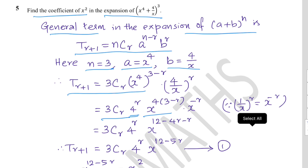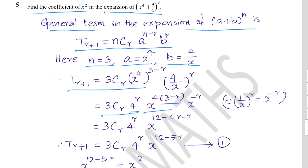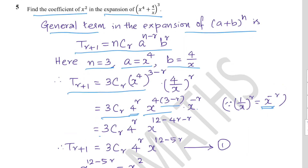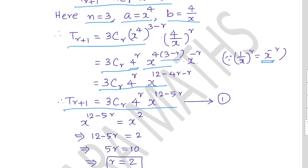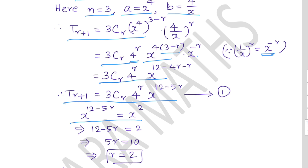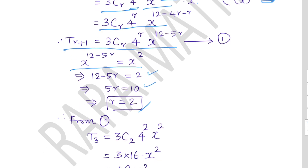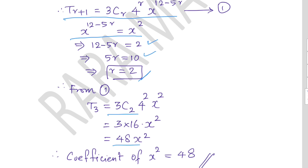For x terms: (x^4)^(3−r) = x^(4(3−r)) = x^(12−4r), and (1/x)^r = x^(−r). Adding indices: x^(12−4r) · x^(−r) = x^(12−5r). Equation 1: T(r+1) = 3Cr · 4^r · x^(12−5r). To find coefficient of x², set 12 − 5r = 2, giving 5r = 10, r = 2. So T3 = 3C2 · 4² · x² = 3 · 16 · x² = 48x². The coefficient of x² is 48.